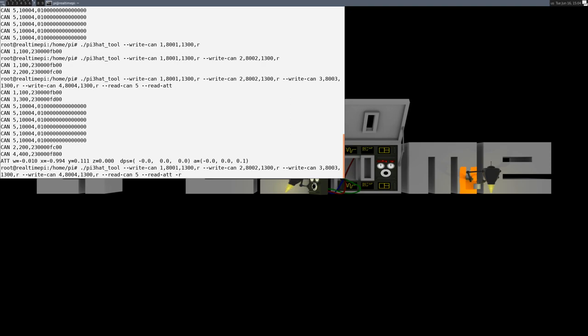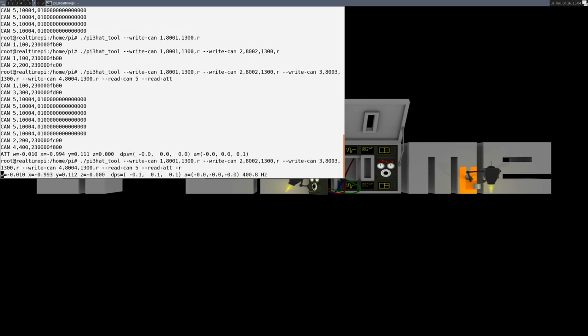The final option is to use the dash r flag, which runs the commands you specify at the maximum possible rate. Here that will be limited by how fast it can read the attitude, which turns out to be 400 hertz. It only displays the attitude despite querying everything.